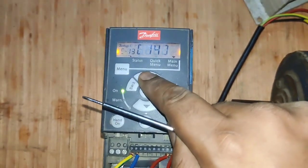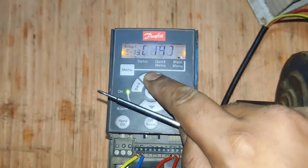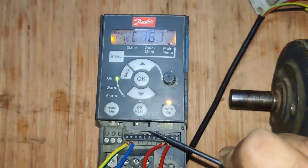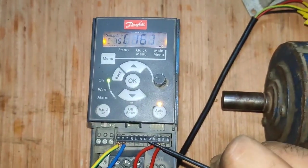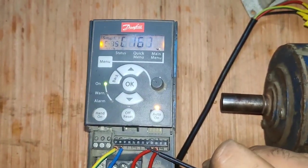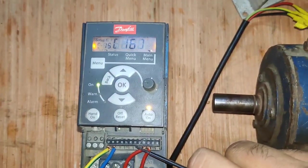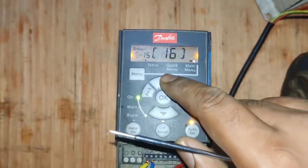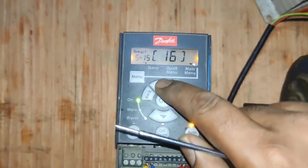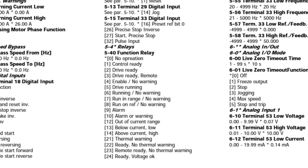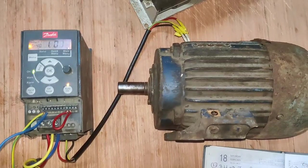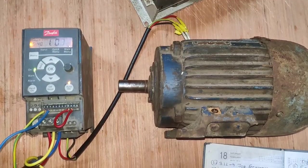Parameter 5-15 is for digital input 33 — we set 16, which means preset reference. So digital input 33 is used for preset reference. You can program any digital input for any function using these parameters in Group 5.